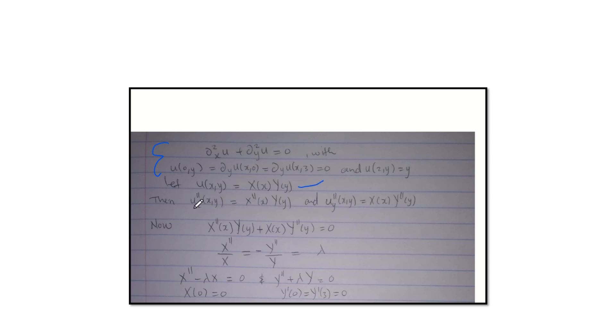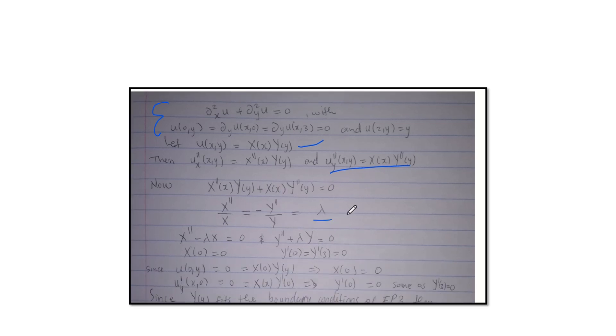So now you're going to get the second partial derivative of u with respect to x, you get this, with respect to y, get this. Now you substitute them back into the original equation over there, which is this is what we get. And then this is just a case of rearranging. Then you say this is equals to lambda, which is just a constant.